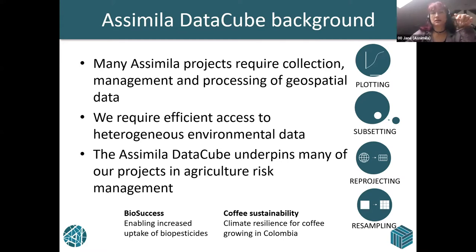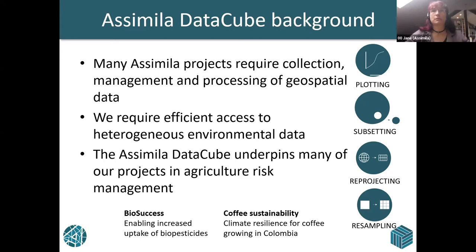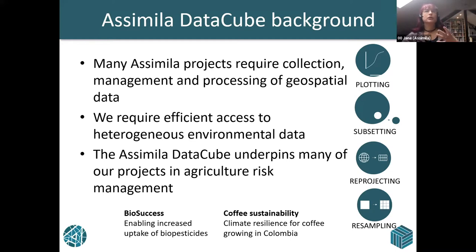We're mainly going to talk about two different projects: Prize and Peatlands. But we've also got things running like BioSuccess, which is trying to use biopesticides to control locusts and grasshoppers. The data cube underpins a web application that gives strategic and tactical information on the best times and places to use biopesticides instead of chemical pesticides. There's also a coffee sustainability project to help growing in post-conflict areas of Colombia, processing data to model coffee berry borer life cycles so farmers can be advised on best ways to improve crop output.